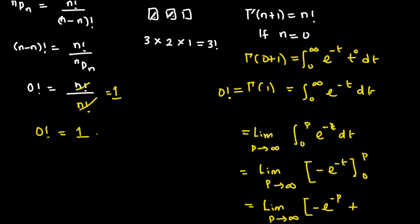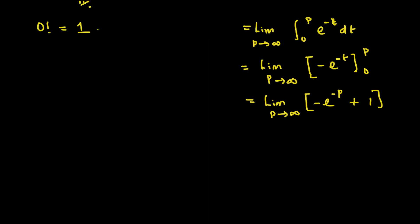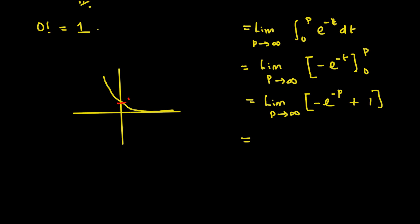Then plus: when we put 0 in, e raised to the power of 0 is 1. So we have the limit as p tends to infinity of minus e to the power minus p plus 1. Now, if we check from the graph of the negative exponential, as x tends to infinity the value of y approaches 0, meaning the graph is already parallel to the x-axis. So this term goes to 0, and we are left with 0 plus 1, which equals 1.